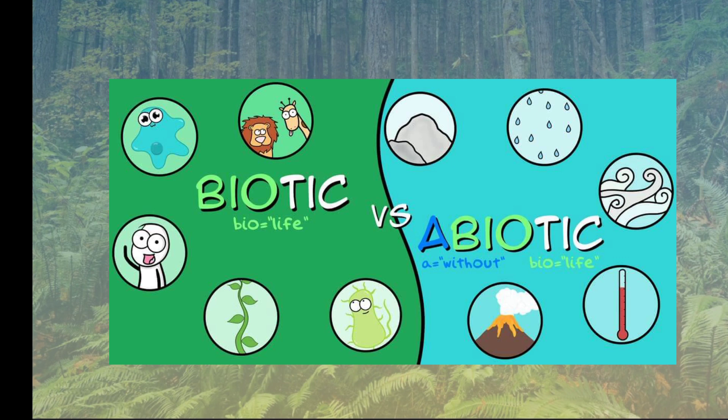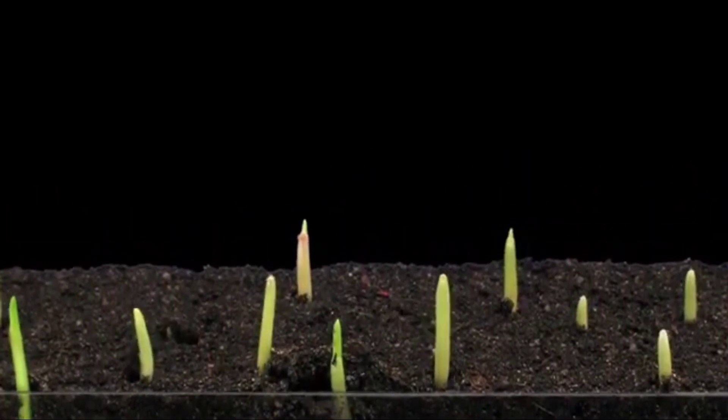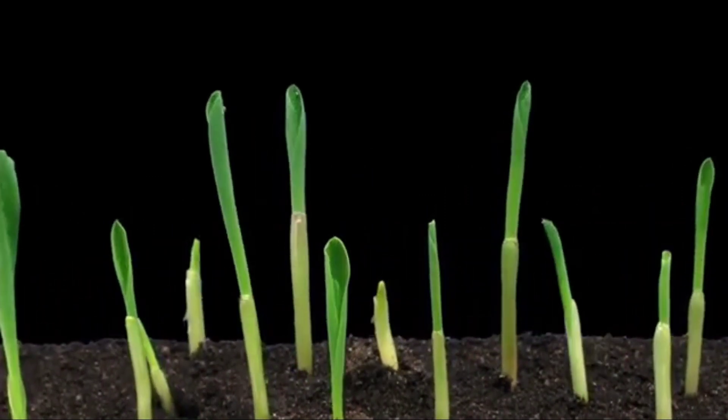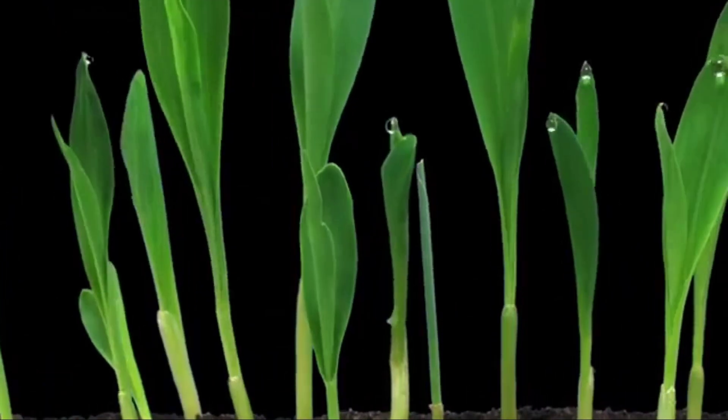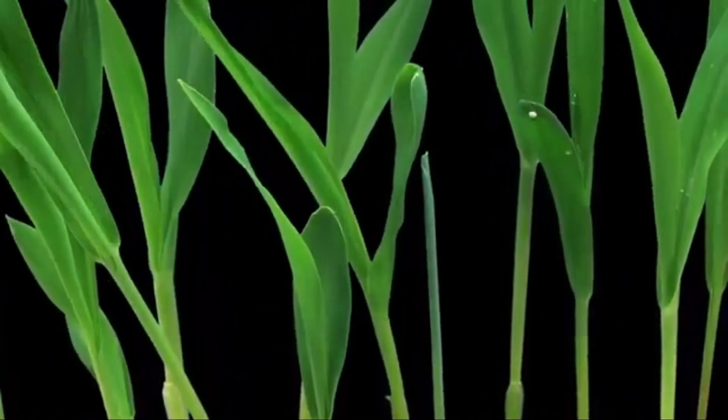Let's look at some examples. First, a seed which is biotic germinates in soil, which is abiotic — showing interaction between living and non-living. Second, we as humans are biotic; we breathe in oxygen and release carbon dioxide, both of which are abiotic.